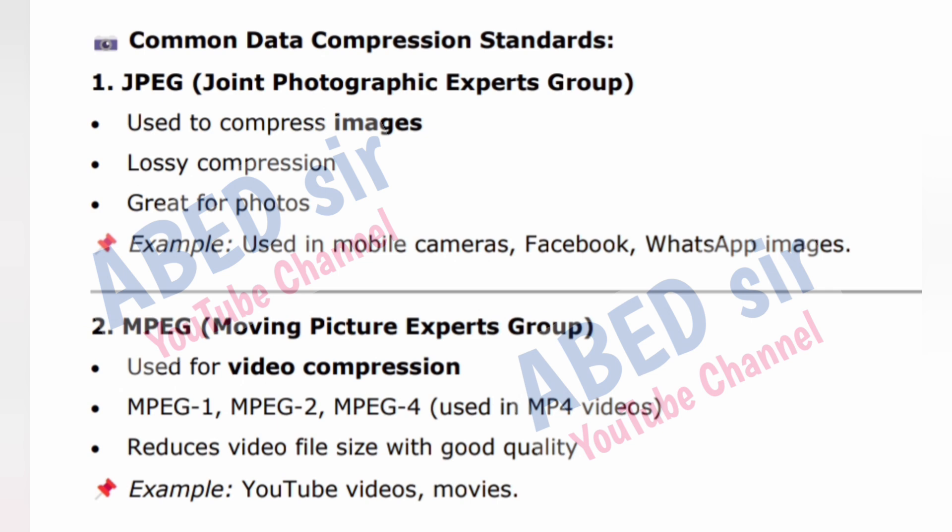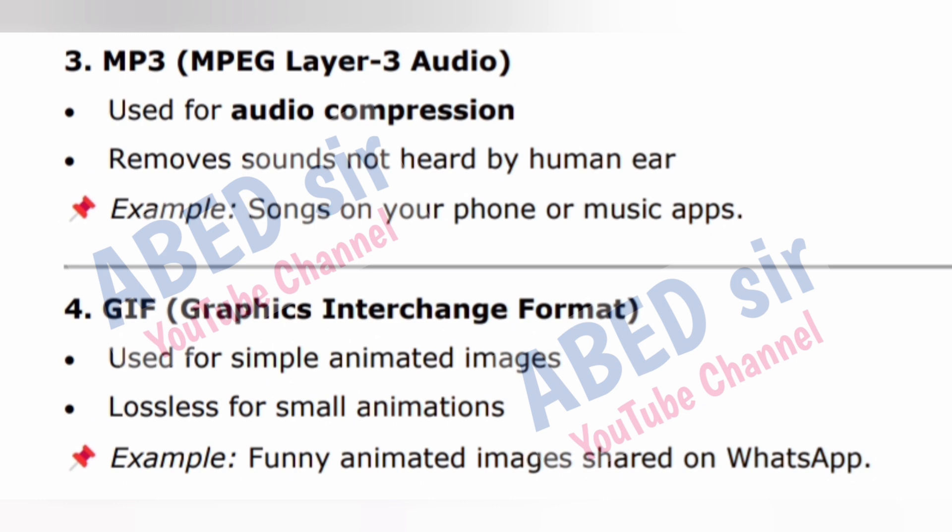2. MPEG — Moving Picture Experts Group: used for video compression. MPEG-1, MPEG-2, MPEG-4 are used in MP4 videos. Reduces video file size with good quality. Example: YouTube videos and movies. 3. MP3 — MPEG Layer 3 Audio: used for audio compression, removes sounds not heard by the human ear. Example: songs on your phone or music apps.